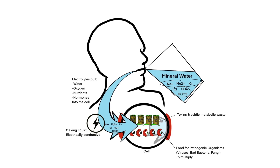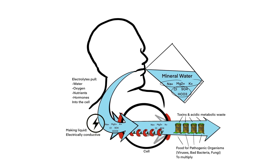This water with minerals or electrolytes flushes out all the toxins and acidic metabolic waste out of the cells. The pathogenic organisms like viruses, bad bacteria, or fungi then have no food to multiply and will vanish too.